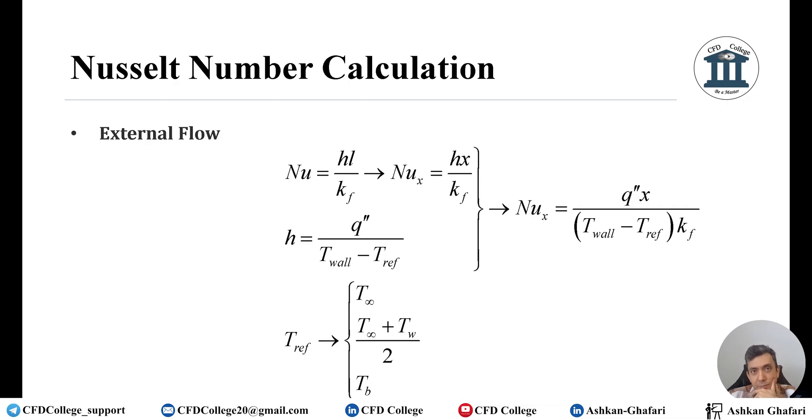For example here when I want to calculate Nusselt number locally, L is x, the length of the plate at each section. So for example here I have to calculate Nu_x which is equal to h_x divided by the conductivity of the fluid. So we have this, we have the denominator and for the numerator we know x because we have the coordinates of the plate. But how we can calculate h?